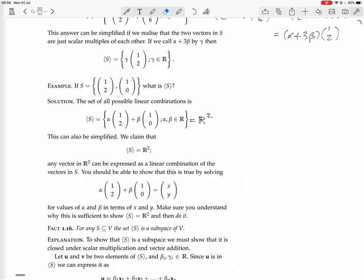Make sure you understand why this is sufficient to show that the span of S equals R², and then do it. So why is it sufficient to show that the span of S equals R²? Well, because here we write down any vector, any arbitrary vector (x,y). And then we find out what must alpha be and what must beta be so that we get x and y. And that way we prove that you can get any vector (x,y) by making alpha and beta suitable scalars to multiply the vectors (1,2) and (1,0).